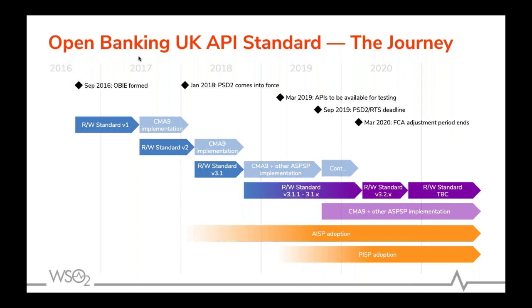This first version was very much a minimum viable product, so we've been on roughly six-month cycles, iterating the standard. We moved to version 2, implemented by the CMA9 towards the end of summer 2018, then version 3.1 published in August 2018 — the PSD2-compliant API standard. Since then, the CMA9 and many other banks in the UK and across Europe have been implementing version 3.1 to meet their PSD2 requirements, which required APIs to be available for testing in March and live in market in September.